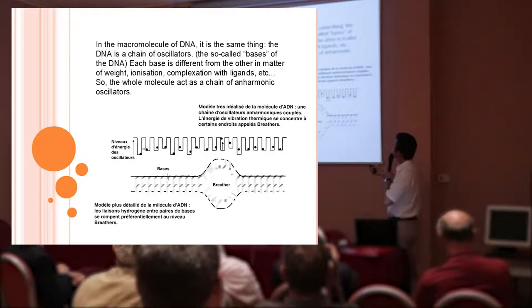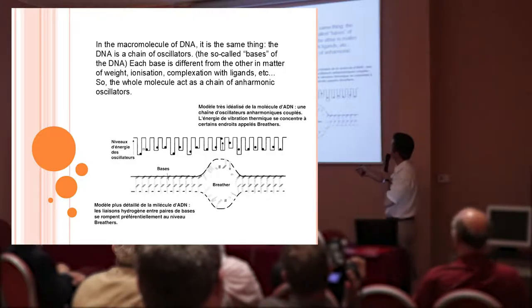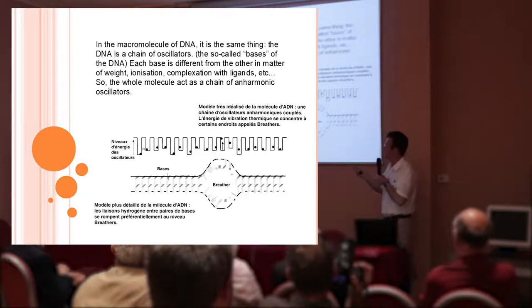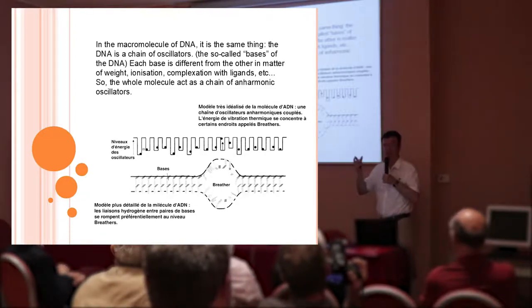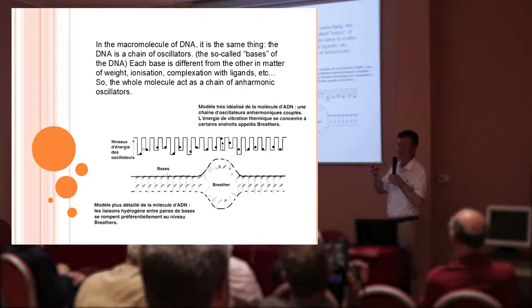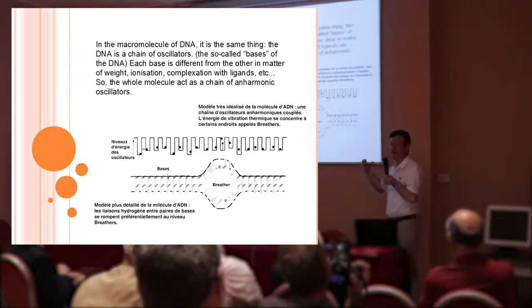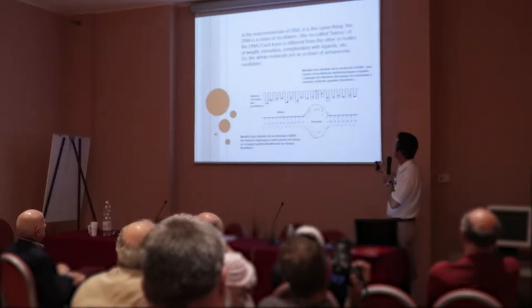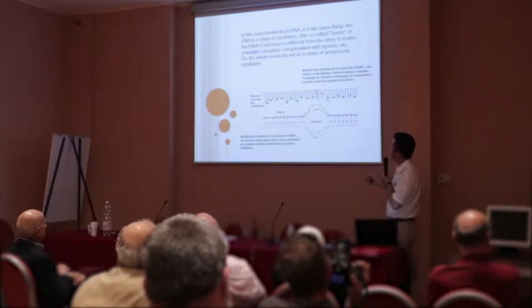Here is a model of the macromolecule of DNA. It's a chain of anharmonic oscillators. Each base is different from the other. They are different because we have four bases: adenine, guanine, thymine, and cytosine. But also, each base is not in the same state. They are ionized, linked to organic ligands, to ions. So there is a strong non-linear interaction, and it leads to the apparition of breather in the chain.